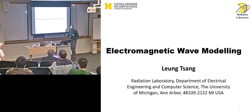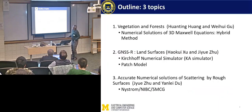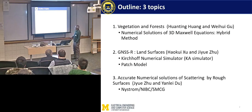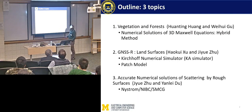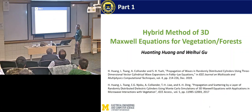I want to give a quick overview of what we have been doing. There are three topics I want to present: vegetation and forests using solutions of Maxwell's equations; GNSS-R land surfaces using the Kirchhoff Li-Merkel simulator with a patch model; and how to solve Maxwell's equations accurately for scattering by random rough surfaces. The first talk is the hybrid method of 3D Maxwell's equations for vegetation and forest, and the work was done by Hong Kong and Yahu Gu.